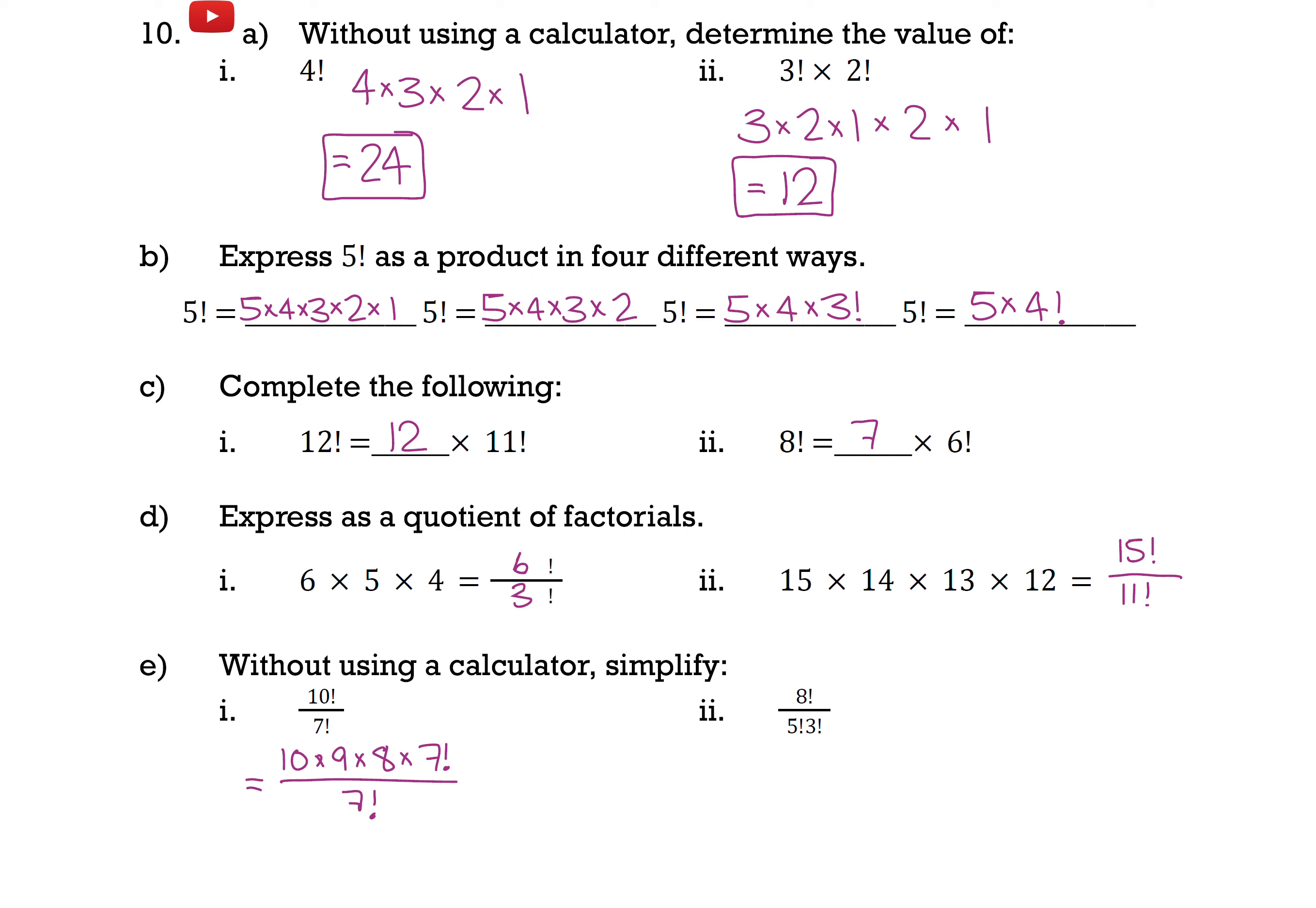And the reason why is because I now have the same thing up above as I do down below. That 7 factorial I see in the numerator and the denominator. And whenever you have a number being multiplied or divided by the same thing, they cancel each other out. And so here this would just be 10 times 9 times 8. And 10 times 9 is 90, 90 times 8 is 720.